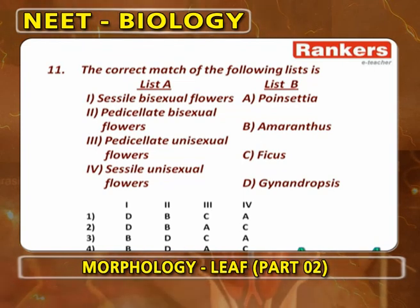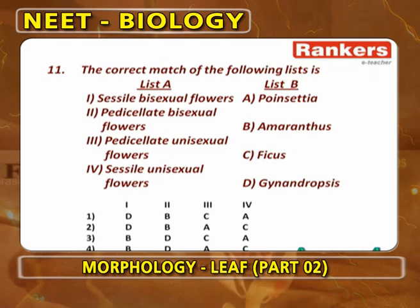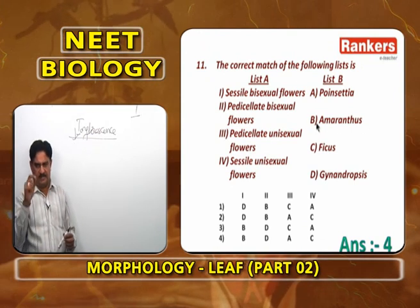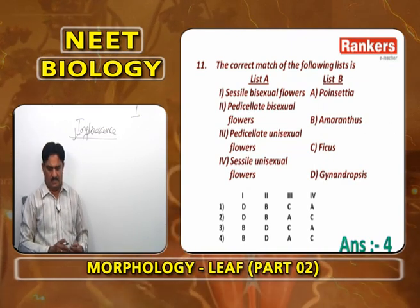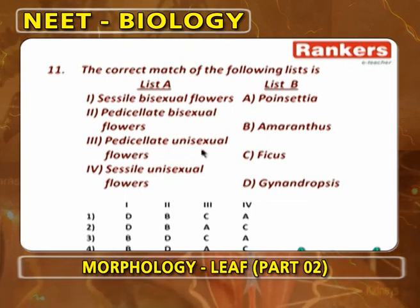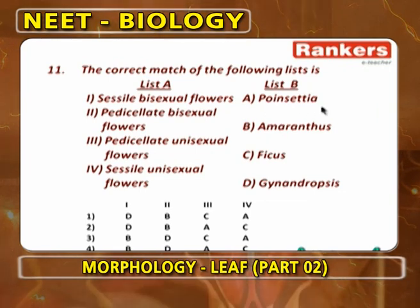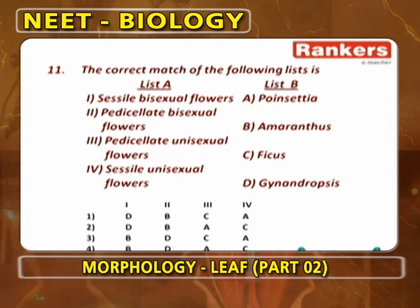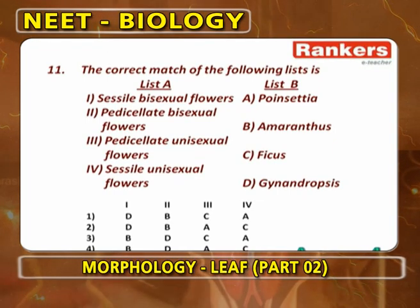Matching table: sessile bisexual flowers — Amaranthus — simple spike. Pedicellate bisexual flowers — Gynandropsis — simple corymb. Pedicellate unisexual flowers — Poinsettia — cyathium; pedicellate flowers with jointed pedicel. Sessile unisexual flowers — Ficus — hypanthodium. So: 1-B (Amaranthus, simple spike), 2-D (Gynandropsis, simple corymb), 3-A (Poinsettia, cyathium), 4-C (Ficus, hypanthodium).